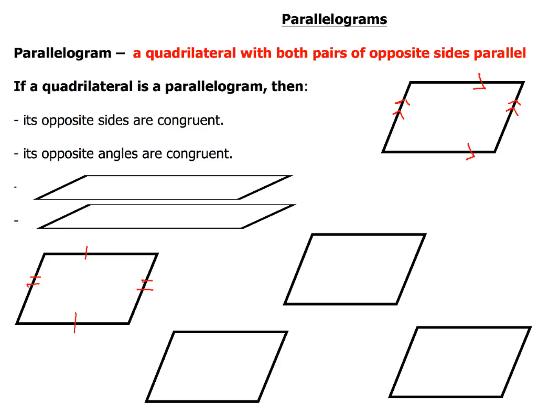One of the other characteristics is that opposite angles are going to be congruent. So this angle and this angle will both be the same as well as this angle here and this angle up here. Opposite angles are going to be congruent in any parallelogram.